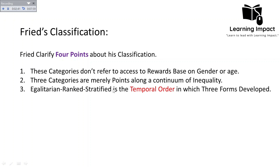Third, egalitarian, rank, and stratified represent the temporal order in which these three forms developed. We can refer to the time in history when these societies developed: egalitarian society existed about ten thousand years ago, then ranked society emerged a few thousand years later, then stratified society spread throughout much of the world over the next four to five thousand years. Now egalitarian societies are few and most societies are stratified.